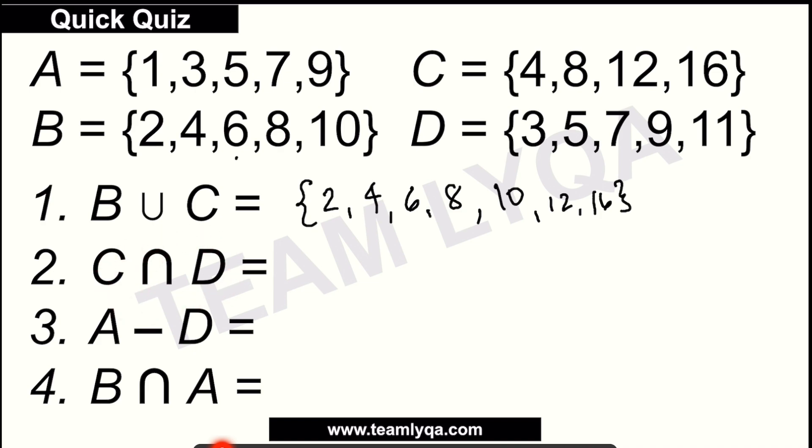Now, C intersection D. So let's look at C and D. Again, intersection, these are the ones that are there. And also here. Now if you look here. 4. There's no 4. No 8. No 12. No 16. None of these either. So what that means.